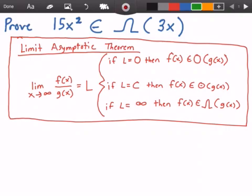And in the red rectangle here, I have the limit asymptotic theorem, which states that if we have a function f of x and a function g of x, we can take the limit as x approaches infinity of f of x divided by g of x to get some limit that we call L. Now, if our limit L is equal to 0, then our function f of x belongs to big O of g of x.